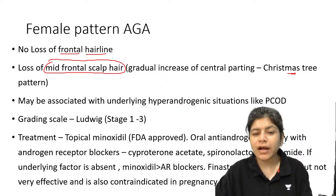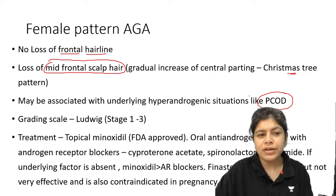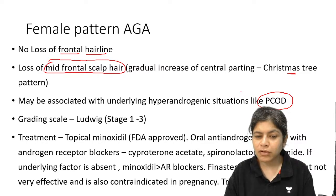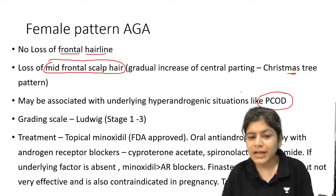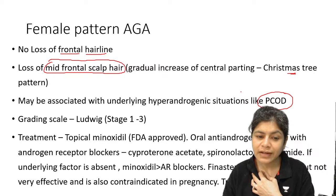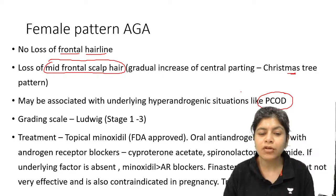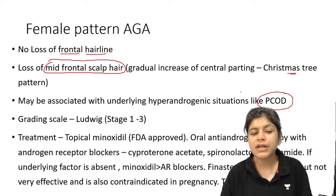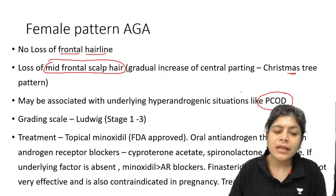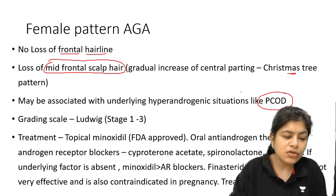In female-pattern androgenetic alopecia, there is no loss of the frontal hairline — only loss of mid-frontal scalp hair, causing gradual increase in central parting with a Christmas tree pattern. It may be associated with polycystic ovarian disease. Treatment includes topical minoxidil (FDA approved), oral antiandrogens like cyproterone acetate, spironolactone, or flutamide. Finasteride may be used but is contraindicated in pregnancy — prefer it in post-menopausal females. Treatment is lifelong. Male androgenetic alopecia uses the Hamilton grading.